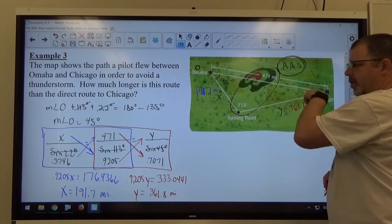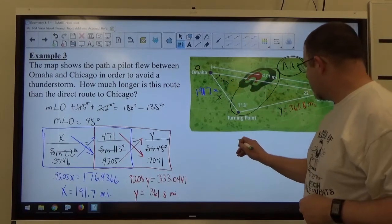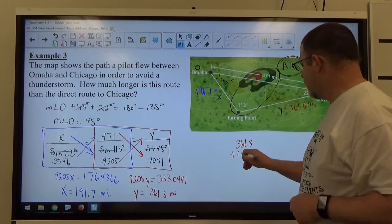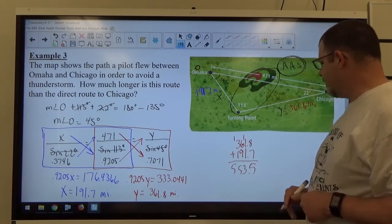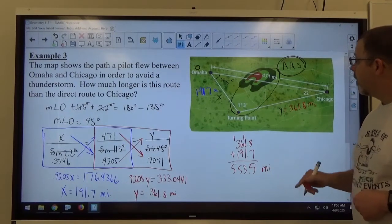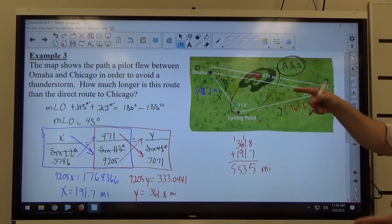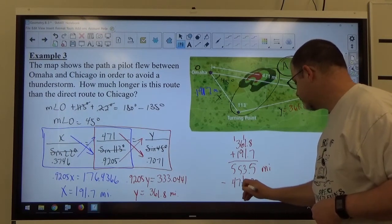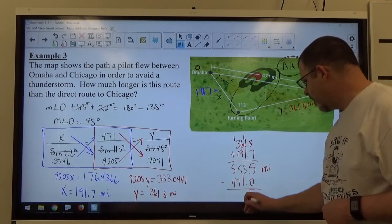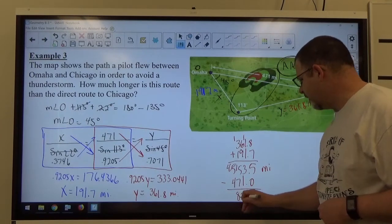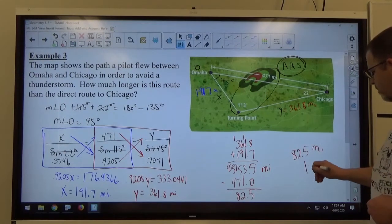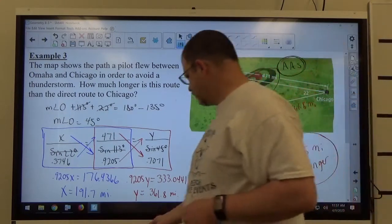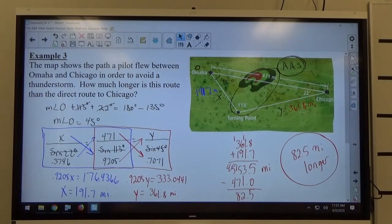So the total distance he traveled going the route he took is just the sum of those two numbers. So 361.8 plus 191.7. That's a 5, carry the 1. 3, 5, carry the 1. He went 553.5 miles as opposed to 471. So how much longer is this route? So we subtract 471. 5, bring the decimal down. 3 minus 1 is 2. We borrow. 15 minus 7 is 8. 4 minus 4 is 0. He went an extra 82.5 miles. And you think if a plane is flying 800 miles an hour, an extra 10 minutes or so to avoid the storm, that might have been a good deal.